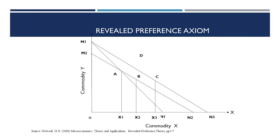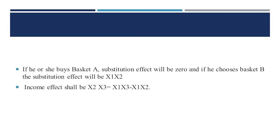The consumer will not select any bundle between M and A, as all of these bundles are inferior to him. Rather, he would only select either A, or a bundle precisely between point A and H on the line segment A to N2. If he buys basket A, the substitution effect will be 0. If he chooses basket B, the substitution effect will be X1 to X2, and the income effect shall be X2 to X3, that is X1X3 minus X1X2.